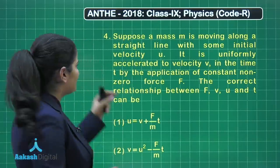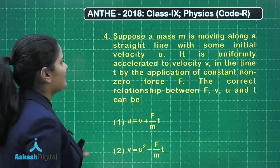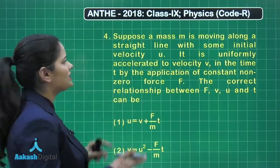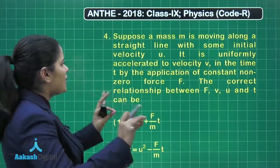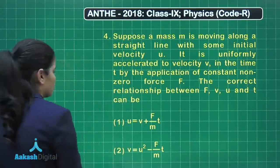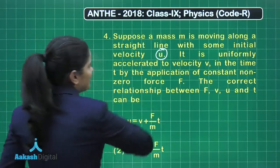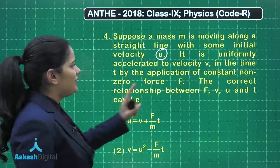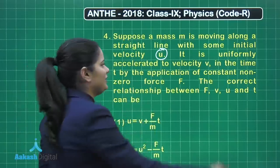Hey, so it's time to take up question number 4, which says: suppose a mass M is moving along a straight line with some initial velocity U. We are given the initial velocity as U. It is uniformly accelerated to velocity V.